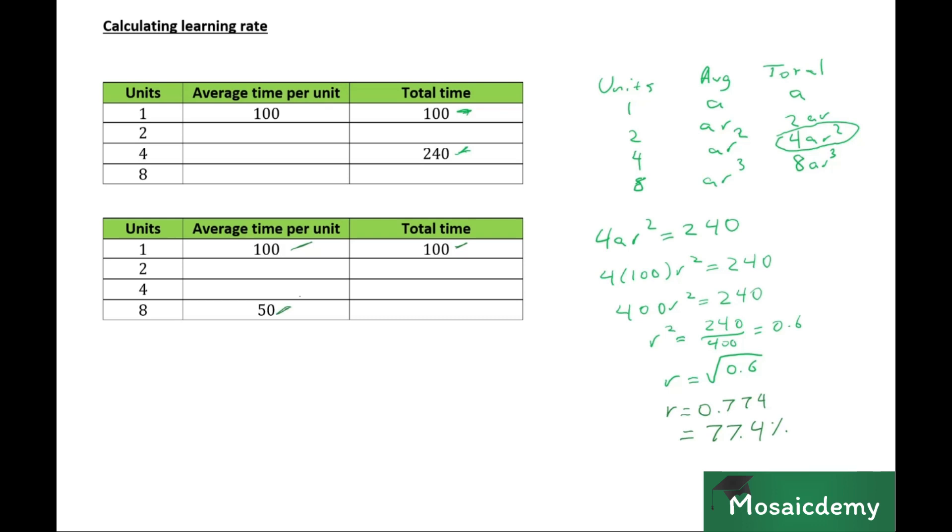So what do we do in this case? Well, we have the average time for the first eight units. And if we go to our base table, for the first eight units, the formula for the average time is AR cubed. So in this case, we know that AR cubed is equal to 50.